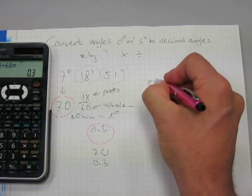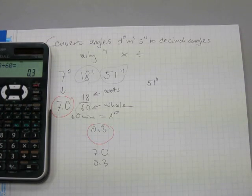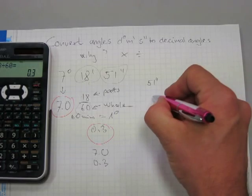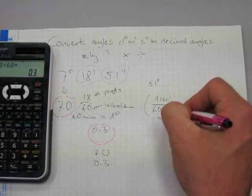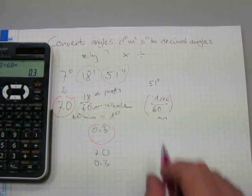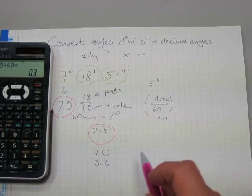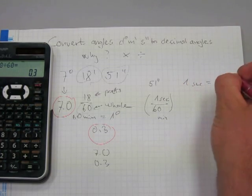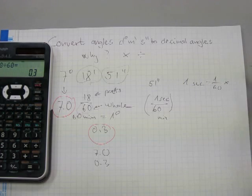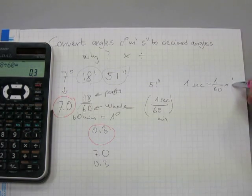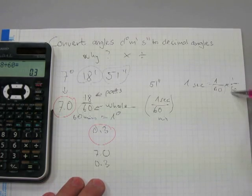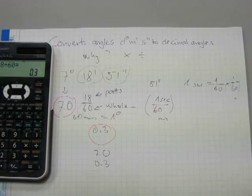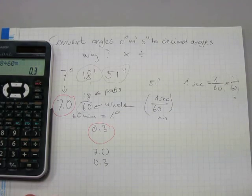51 seconds is what part of a degree? Well, one second is 1/60 of a minute because this is a minute. One second is 1/60 of a minute, but one minute is 1/60 of a degree, so one second is 1/60 of, and the word 'of' is usually written down as a multiplication, so one second is 1/60 of 1/60 of a degree.